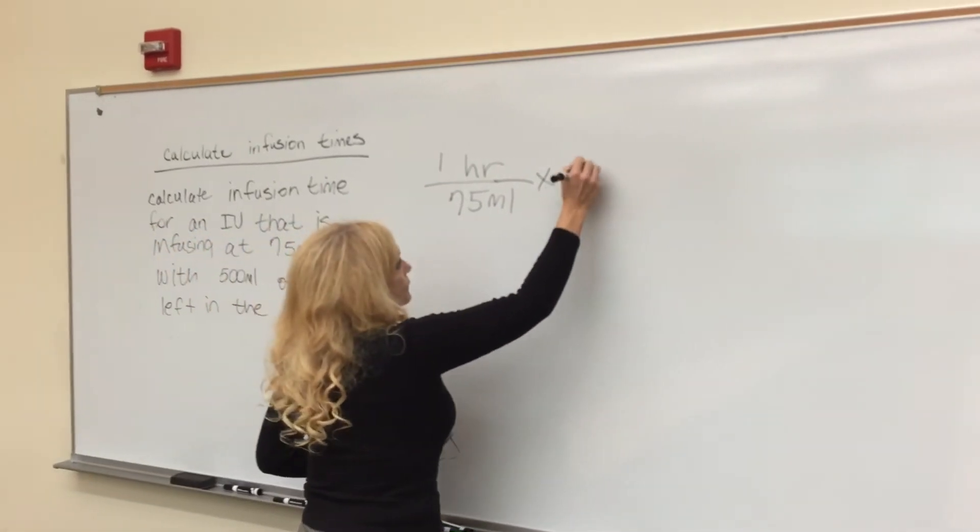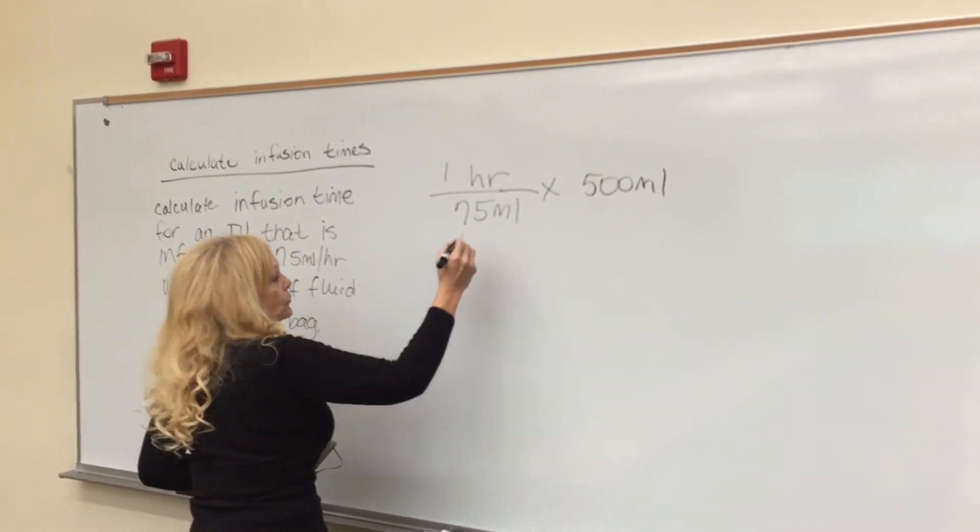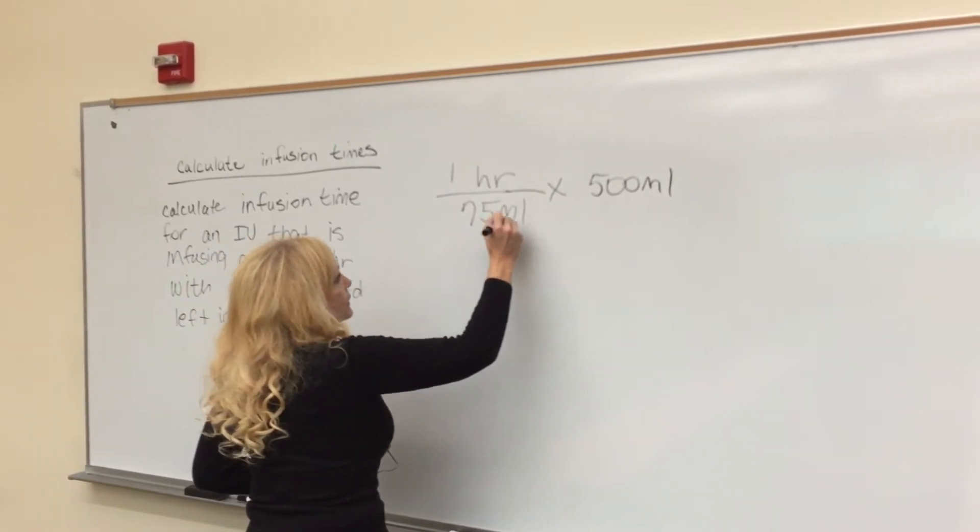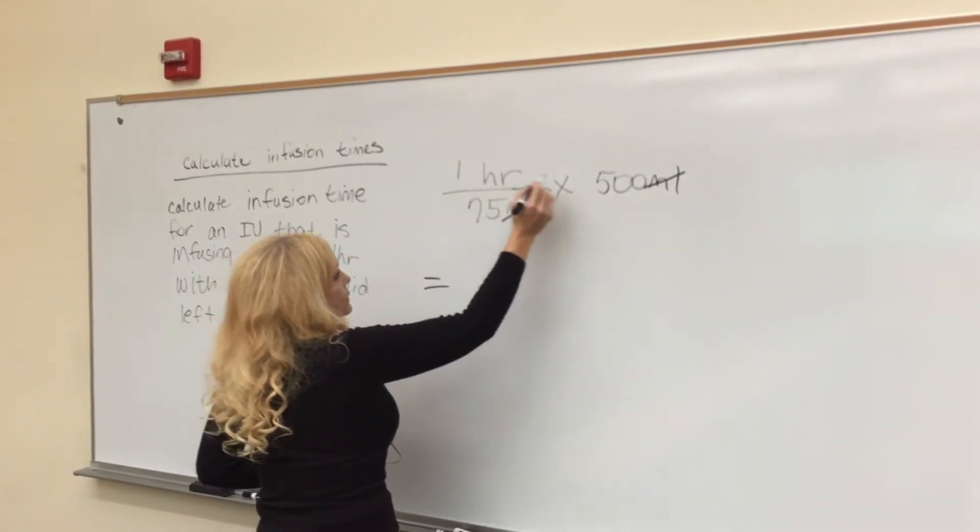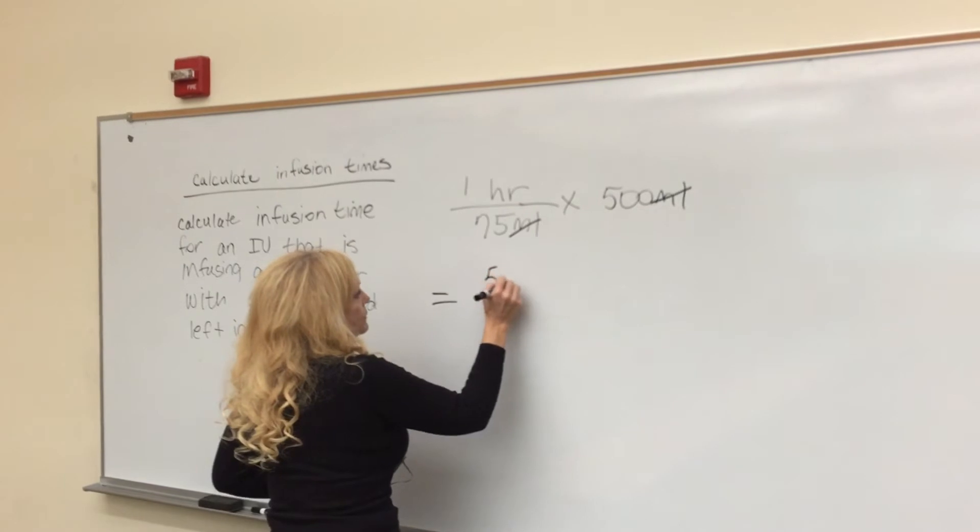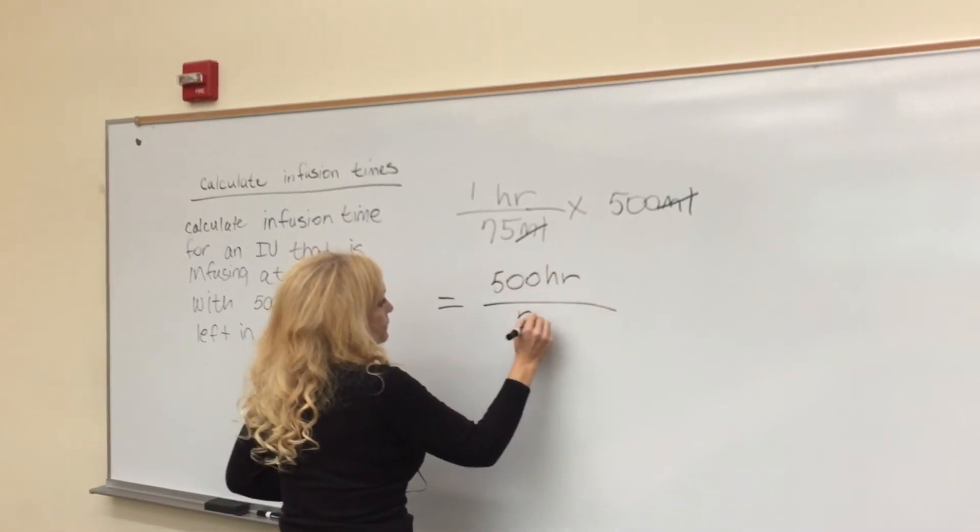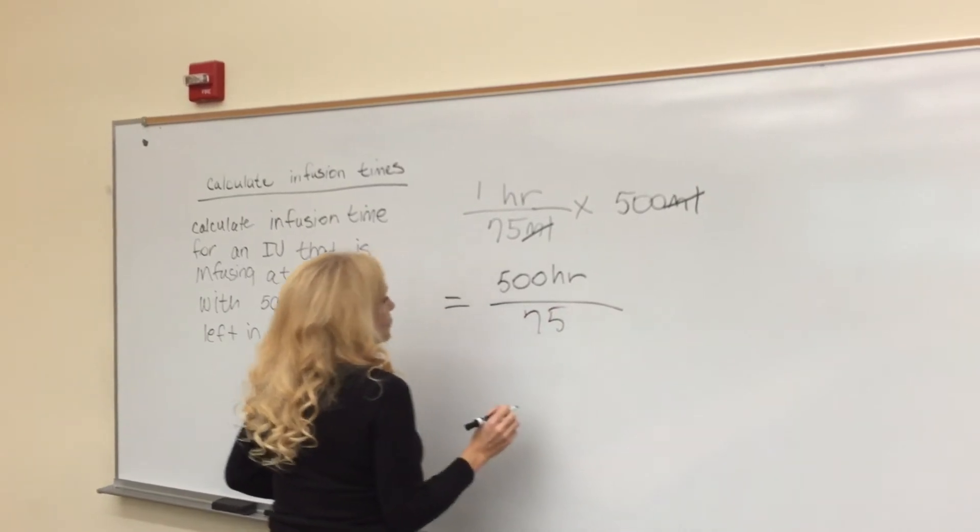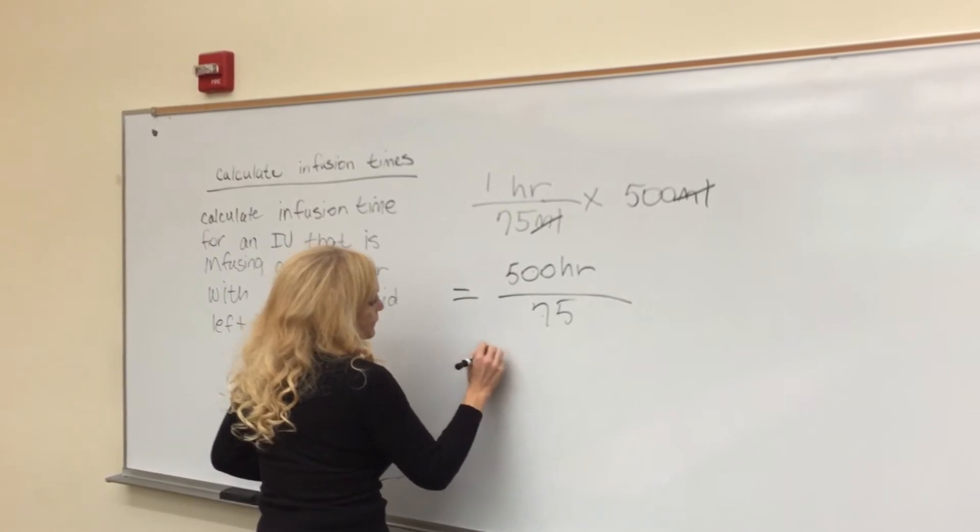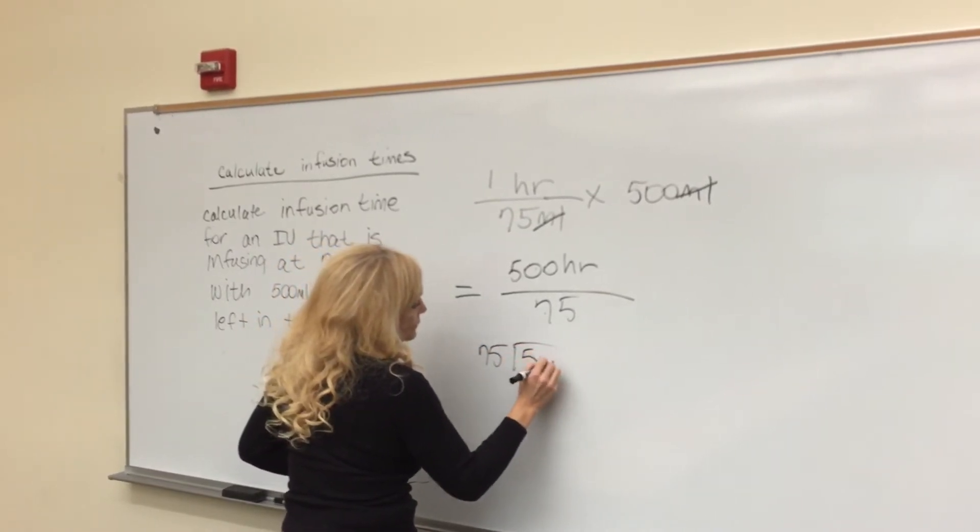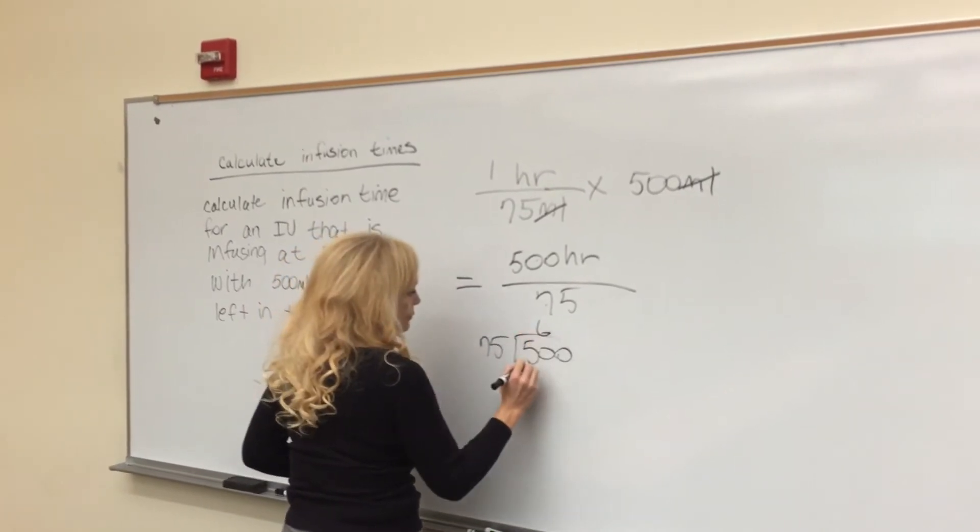The next step we need to do is eliminate the milliliters, and what we have next is one times 500, which is 500 hours over 75. So we're going to divide 75 into 500, so we're going to go 75 into 500, and that's going to be six.